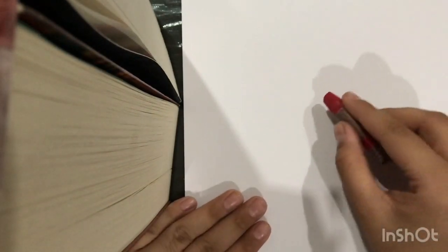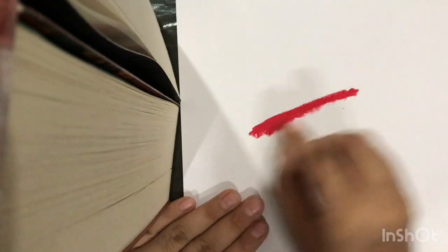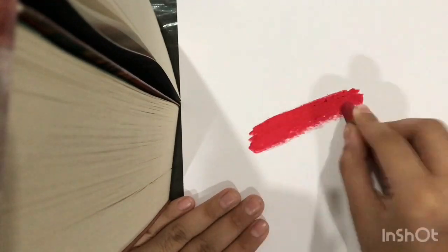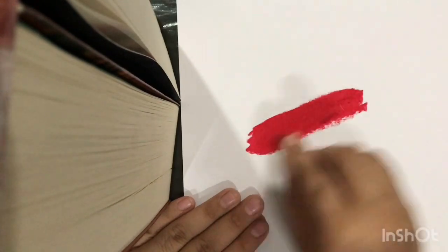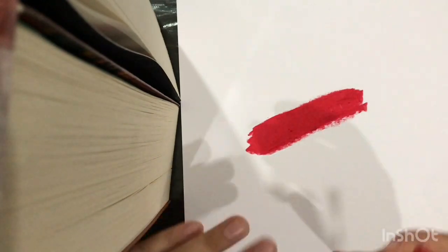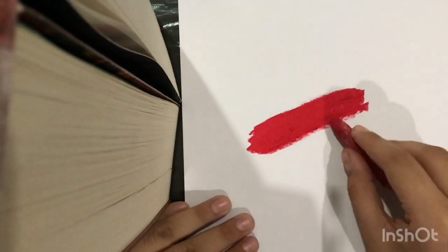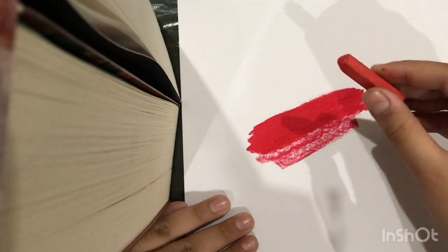So firstly you'll be needing this crimson red and you'll just start coloring. Try to do it in one direction because it's better. Sometimes you'll get these kinds of lumps like the shade will come out to be different, like a darker shade, but if you just keep coloring on it it'll just go off.